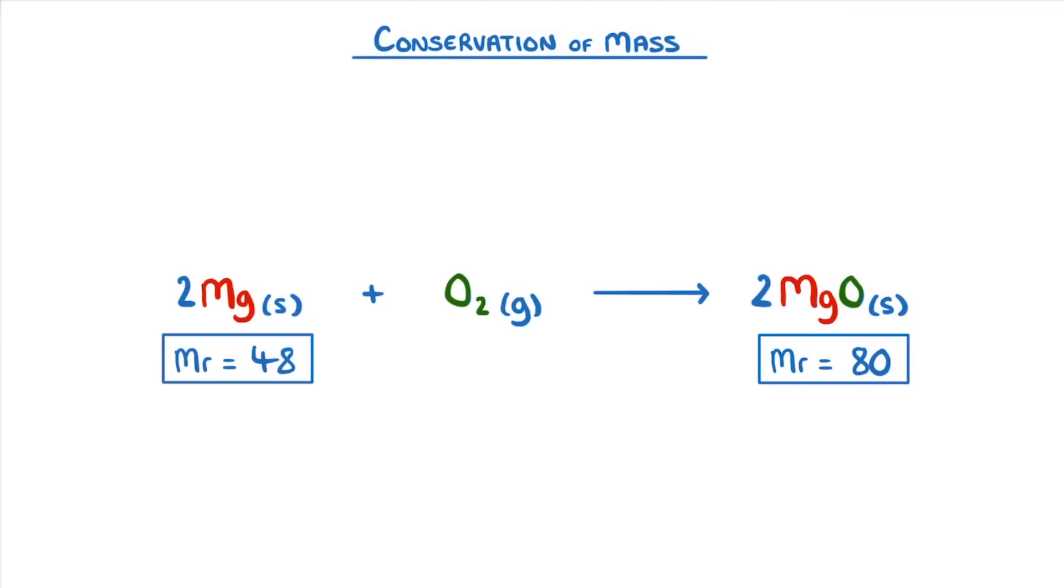For example, if we heat up a metal, like magnesium, it will react with oxygen to form magnesium oxide. And because the relative formula mass of magnesium oxide is higher than that of magnesium by itself, it will weigh more.